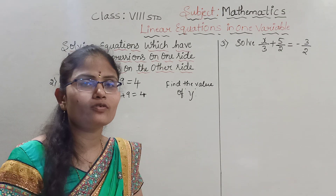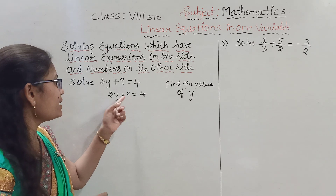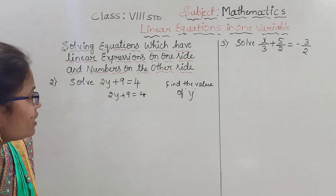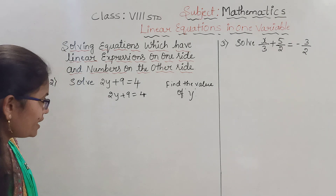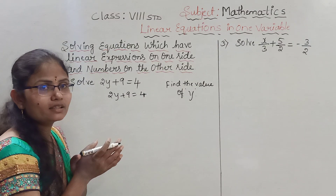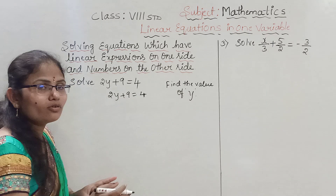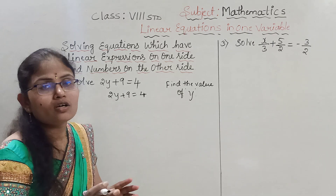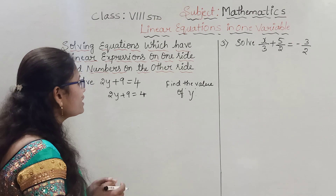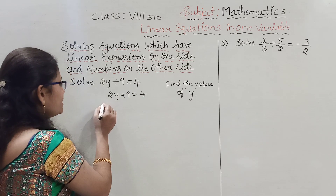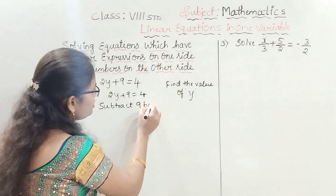How do we find the value of y? By eliminating the terms associated with y — that is plus 9 and 2. In the LHS we have 2y plus 9. First we eliminate the term plus 9. To eliminate plus 9 we subtract 9 from both sides.